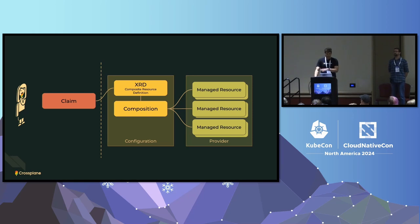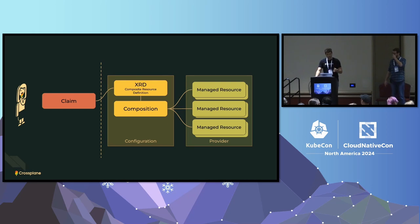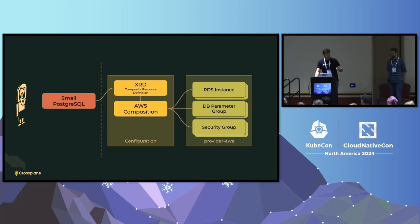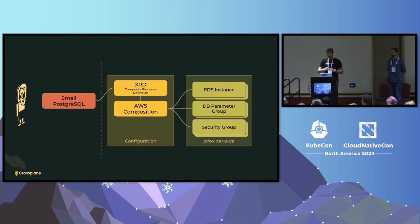Starting on the right side with managed resources — the one-to-one relationships with S3 buckets, GKE, node pools — these get composed into a higher-level composition. On top of that, we've got the Composite Resource Definition (XRD), which is the schema you're exposing to your developer: the knobs they're allowed to change. Then we've got the claim. So a developer wants to create a database — she puts in two inputs: size 'small' and engine 'Postgres.' Behind the scenes, the platform team has defined an XRD with an AWS composition made up of an RDS instance, a DB parameter group, and a security group. The developer gets all that infrastructure created the way you want it done.